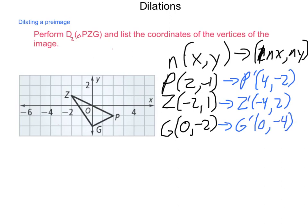What we have is the image at these coordinates. Now as we go through and plot them, P prime, Z prime, and as best as we can estimate, G prime. Then we simply connect the sides in order to make our image of this dilation.